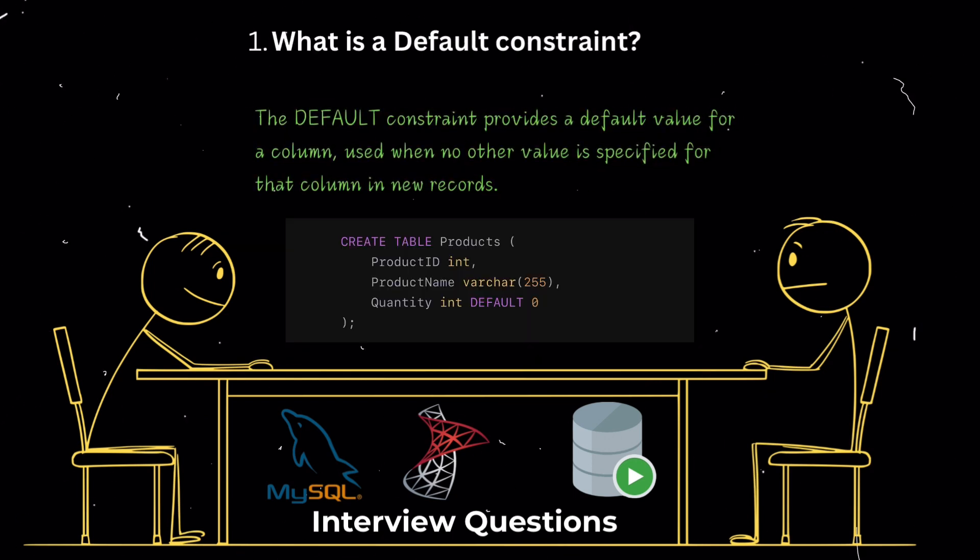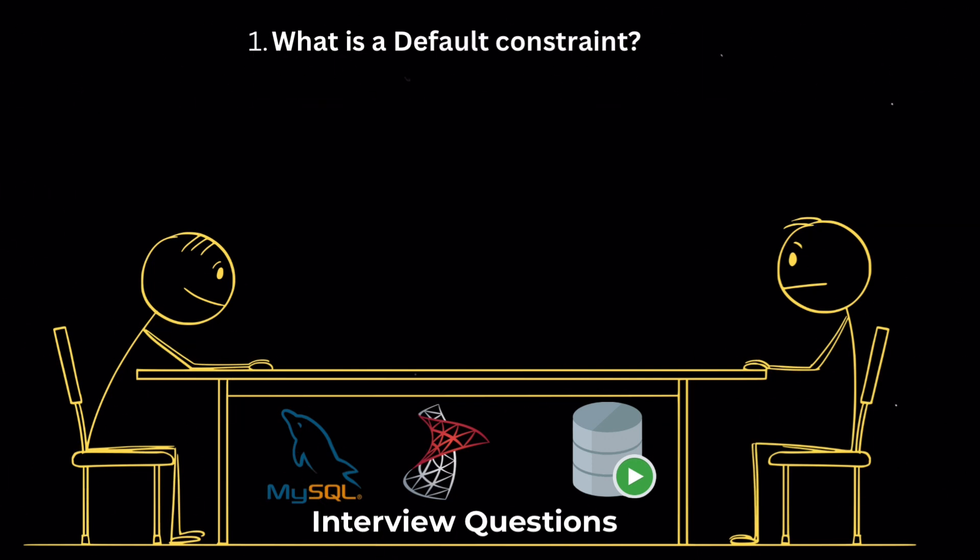What is a default constraint? The default constraint in SQL is used to provide a default value for a column. This value is automatically added to new records if no other value is specified for that column. For instance, if you set a default value of zero for a column, any new row added to the table without a value for that column will have zero as its value.